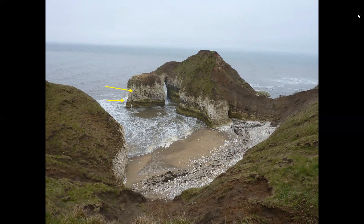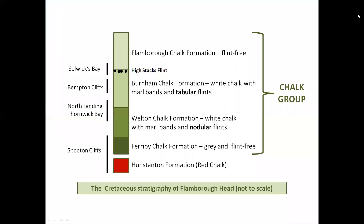The till deposits are relatively thick at High Stacks and we begin to see some of their complexity. A lens of bedded chalk gravel is visible within the till. The sea is attacking the headland from more than one direction and threatens to break through and isolate High Stacks from the mainland at a point which may well be another paleo valley. Recently access to beach level at High Stacks has become extremely hazardous and should not be attempted, but flint occurs in the lowest chalk beds exposed in the walls of the small cove. This is the High Stacks Flint which we observed on Kindle Scar, and it marks the boundary between the flinty Burnham Formation and the flintless Flamborough Formation.